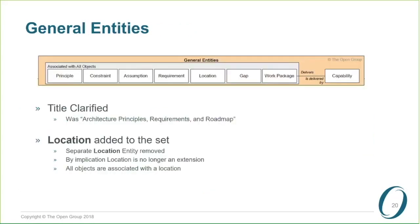The top box previously had a very odd name called 'architecture principles requirements and roadmap.' We've simply now called it 'general entities' and highlighted the fact that these are effectively characteristics of everything else in the metamodel.